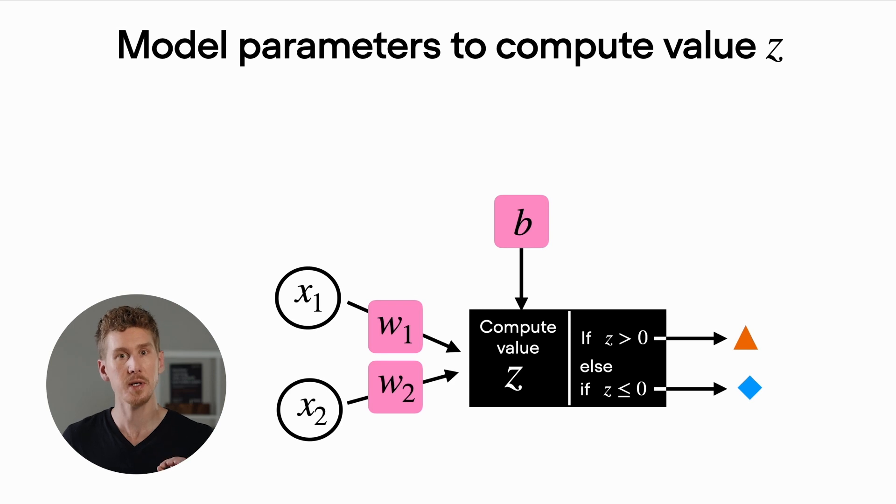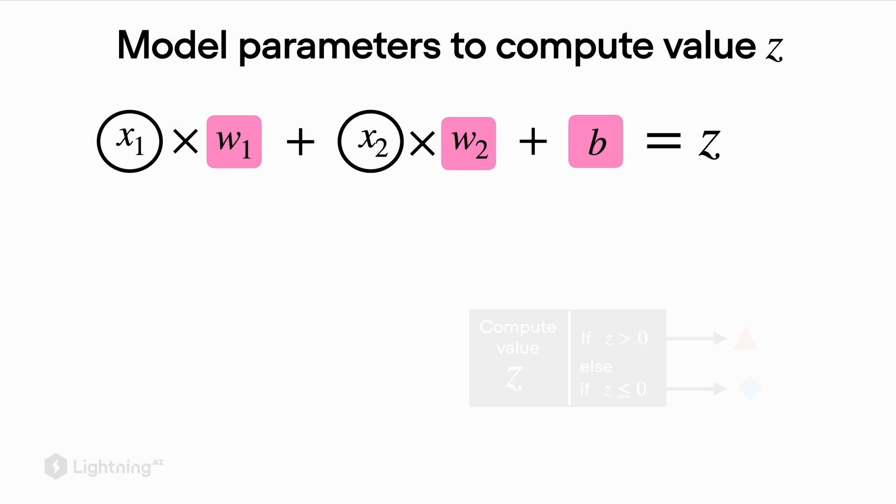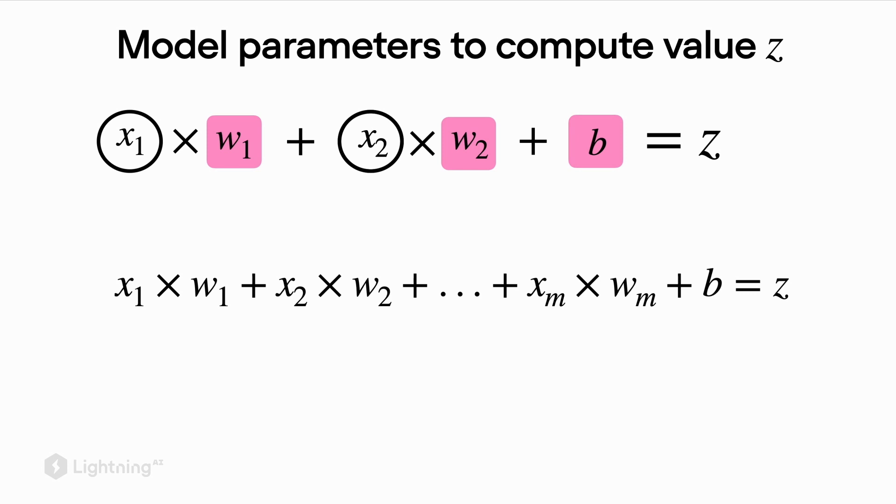So now let's step through the process of computing actually the value z using the inputs and the model parameters. So essentially, in a nutshell, we can think of z as the weighted input. For that, we multiply the input feature x1 with the model parameter w1. Then we multiply the second feature value with w2. And lastly, we add this bias unit to it. Now in our particular example, we looked at a dataset with two feature variables. However, in many real-world cases, we have higher dimensional datasets. So in this case, we can extend this formula and go up to m features where m is really an arbitrary number that stands for the number of dimensions of features in your dataset.